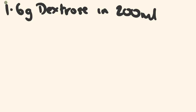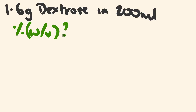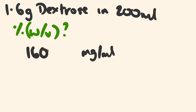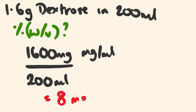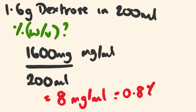Another question: say we have 1.6 grams of dextrose in 200 mils, and we want to know what the percent W/V is. First, put this in milligrams per mil: 1.6 grams times 1,000 is 1,600 milligrams over 200 mils. 1,600 divided by 200 equals 8 milligrams per mil. Then dividing by 10 to get back to the percentage gives 0.8% W/V.